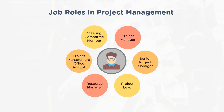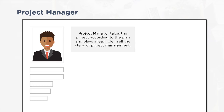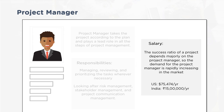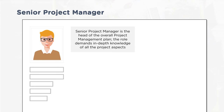Common project management roles include project manager, senior project manager, project lead, resource manager, PMO analyst, and steering committee member. The project manager is the owner and takes accountability for the project, playing a lead role in all steps. Responsibilities include managing, reviewing, and prioritizing tasks, looking after risk management, stakeholder management, and project communication management.